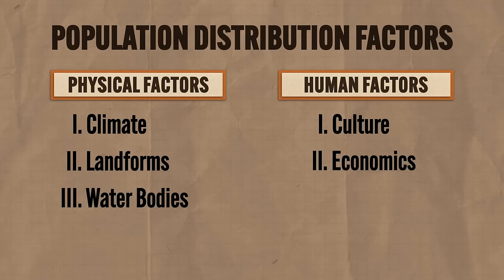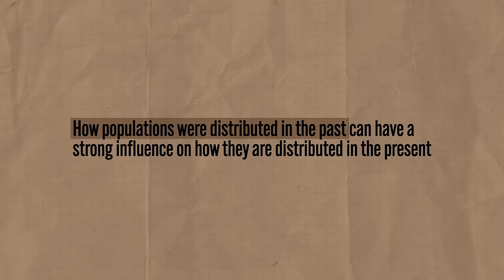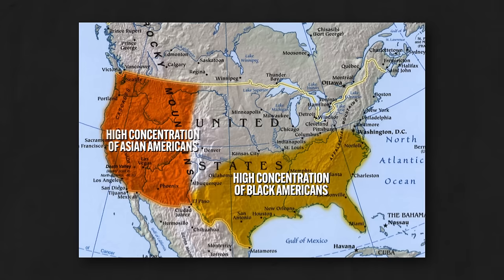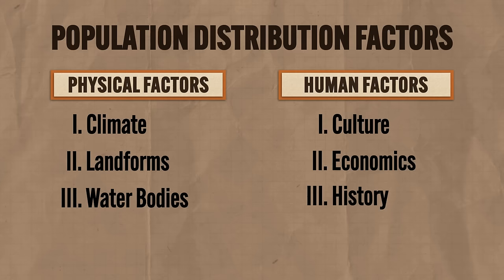A third human factor for population distribution is history. How populations were distributed in the past can have a strong influence on how they are distributed in the present. For example, over half of all Black Americans live in the South, which has a lot to do with the history of slavery. And almost half of all Asian Americans live in the West because their ancestors migrated from Asia and settled there.